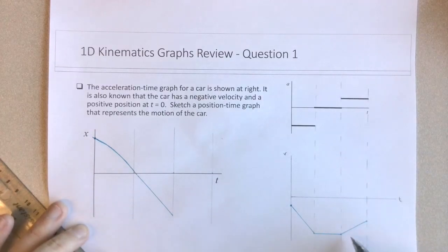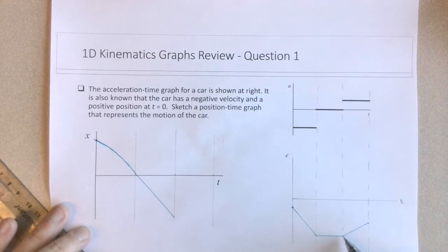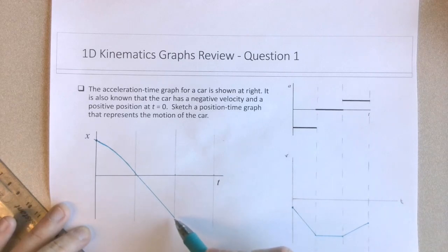And then what happens over the third interval here is that the velocity becomes less negative. So again, the tangent lines to the xt still have to be negative, but must be becoming less negative.